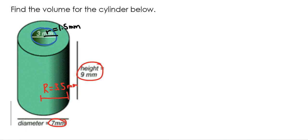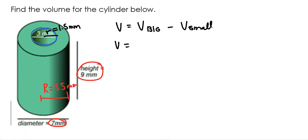Let's calculate the volume of this cylinder with the hole in the middle. To find the volume, I need to find the volume of the big cylinder and then subtract the volume of the small cylinder. If I calculate the volume of the entire cylinder and minus the volume of the cylinder in the middle, that gives me the volume of the green cylinder. The volume formula for a cylinder is pi times radius squared times the height.